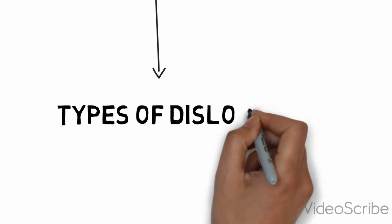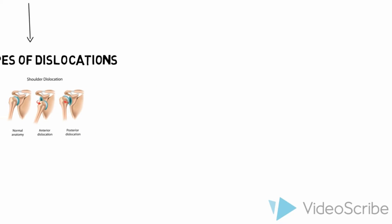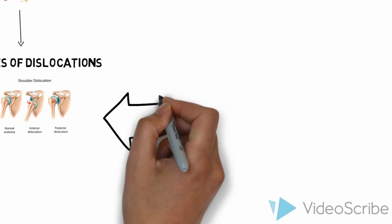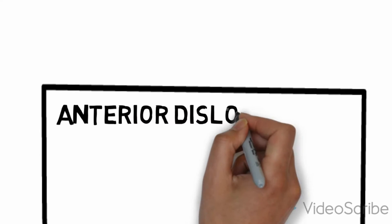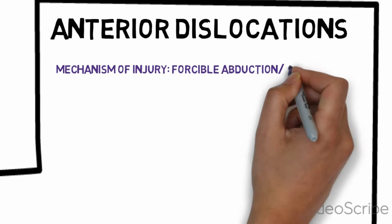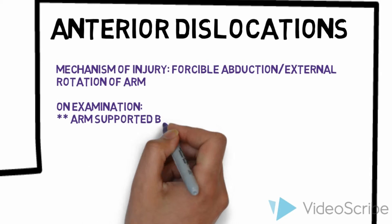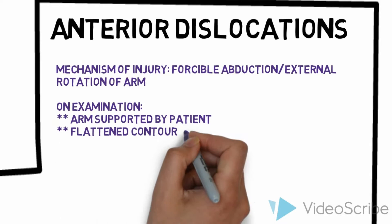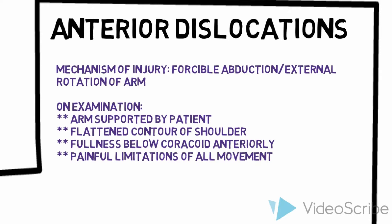We will now discuss the types of dislocations, of which there are mainly two: anterior and posterior dislocation. Statistics show that over 90–95% of shoulder dislocations are anterior dislocations. The mechanism of injury is usually forcible abduction and external rotation of the arm, which can result from a fall on the outstretched arm. This results in the anterior displacement of the humeral head, which will then be lying below the coracoid process.